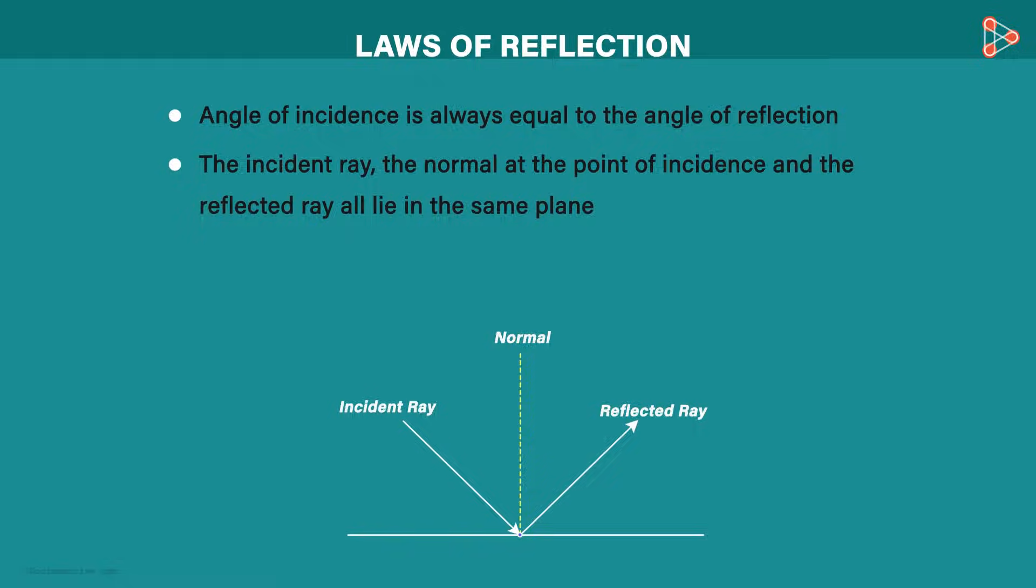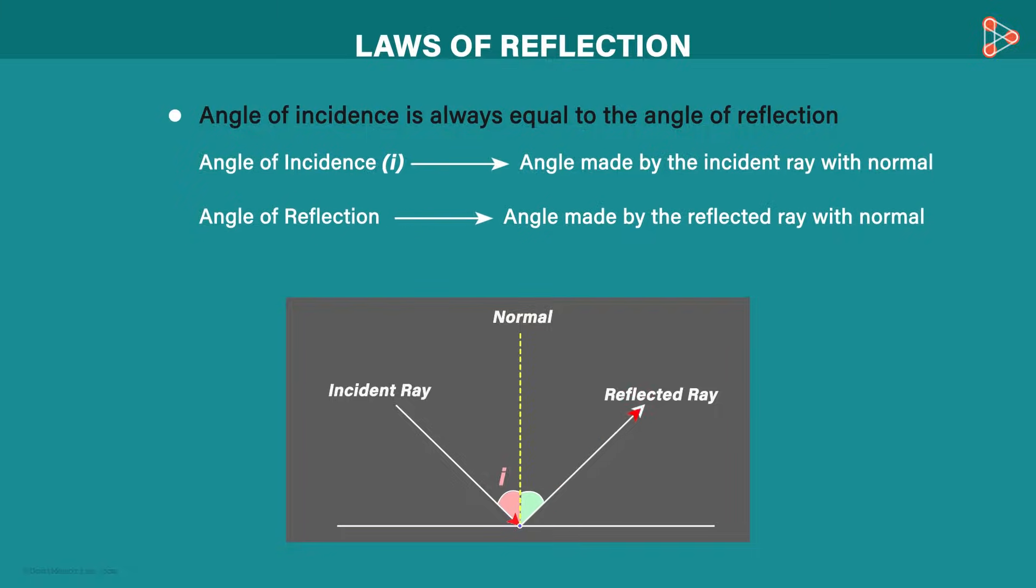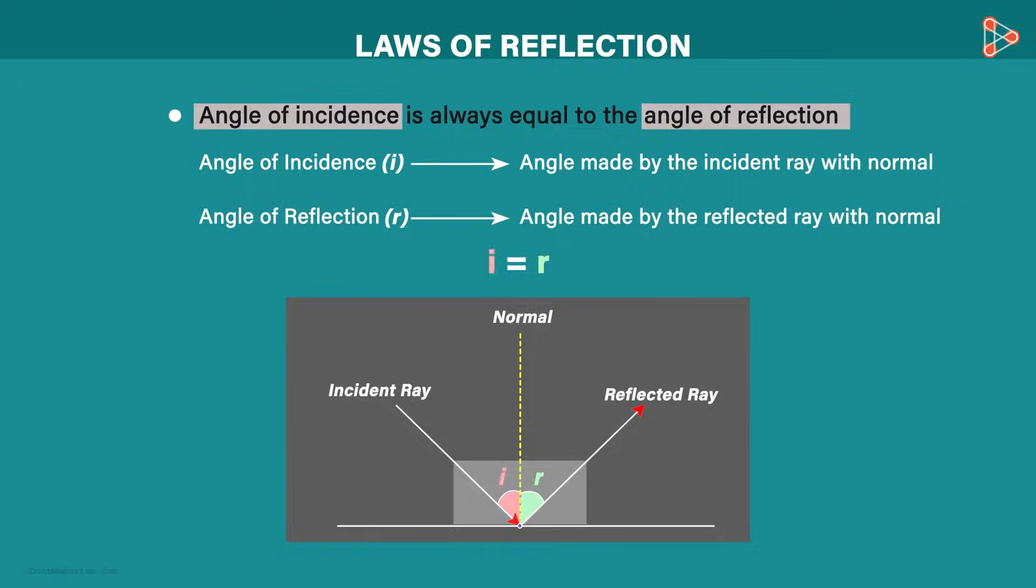To understand the first one, we first need to know what angle of incidence and angle of reflection are. The angle of incidence is the angle made by the incident ray with the normal. It is denoted by I. The angle of reflection is the angle made by the reflected ray with the normal. It is denoted by R. So our first law says that the angle of incidence is always equal to the angle of reflection. I is equal to R.